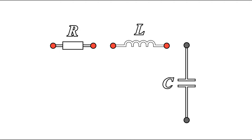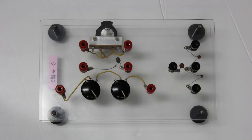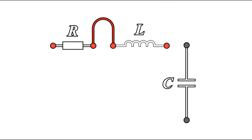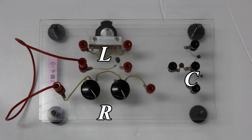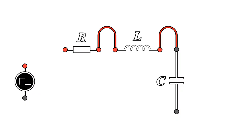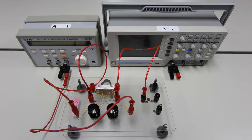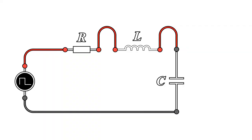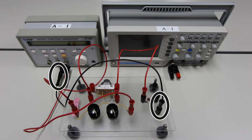Now let's wire them up. Connect the resistor and coil on the terminal board with lead cables. Connect the coil and the capacitor. Now the resistor, coil, and capacitor are connected in series. Next, let's connect the oscillator to the terminal board. From the red terminal of the oscillator's conversion connector, connect the red lead cable to the end of the resistor. Connect the black lead cable to the end of the capacitor.